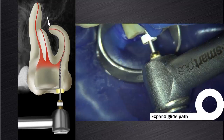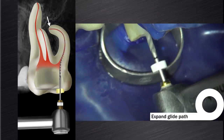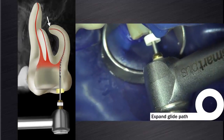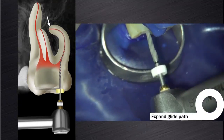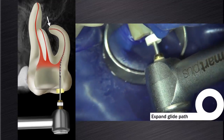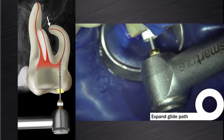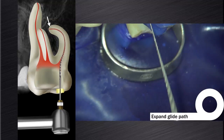Once we achieved working length and made a size 10 K-file loose to create a reproducible micro root glide path, then you can go back to the ProGlider to expand the glide path to full working length. On this video you can see that I am using small backstroke brushing motions to expand the glide path before we do canal preparation with the ProTaper Next instruments.